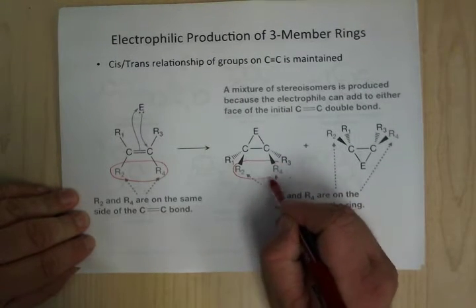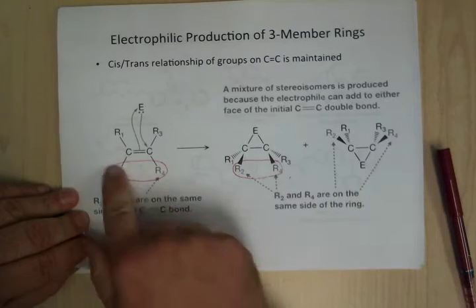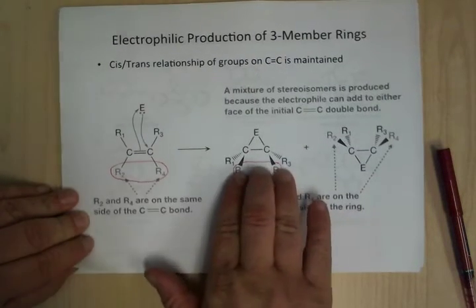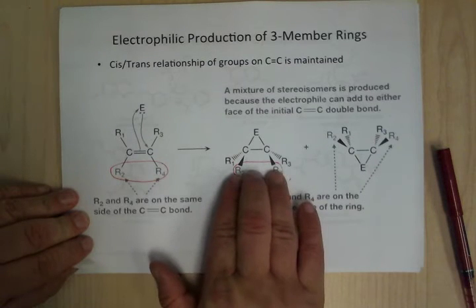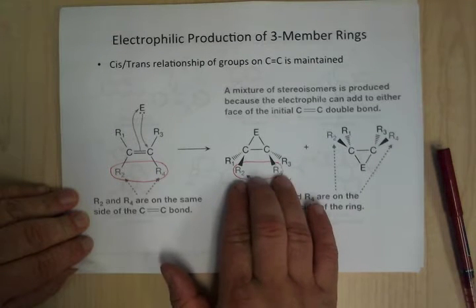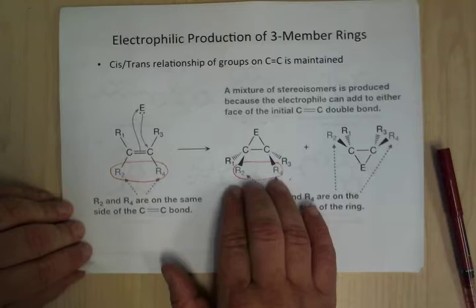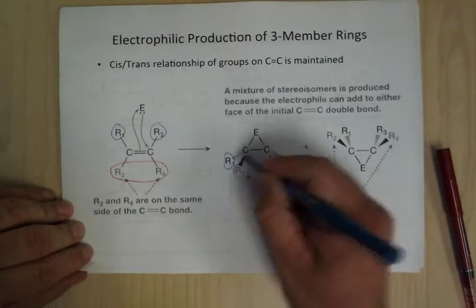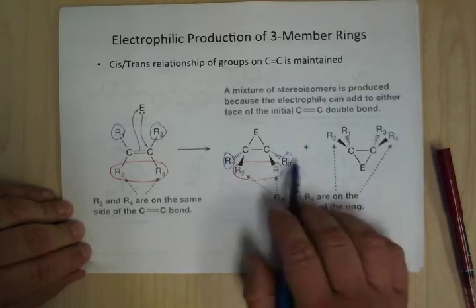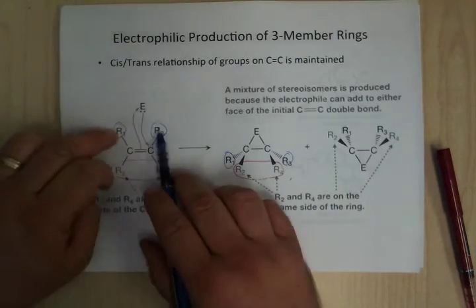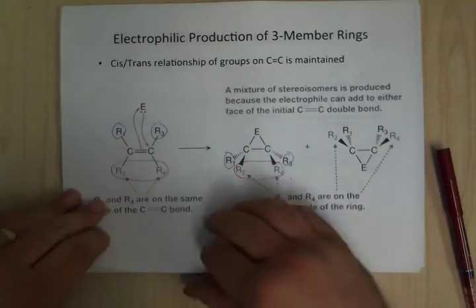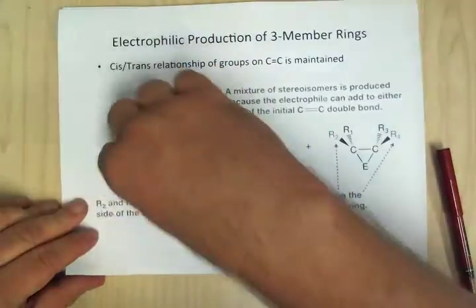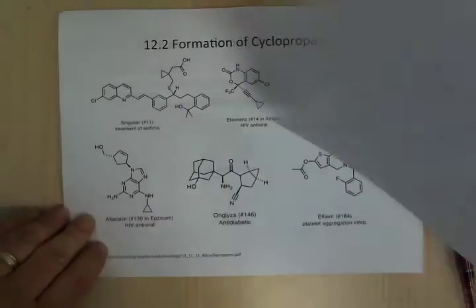This double bond becomes this new bond here, and so you get the simultaneous attack here and here to make this three-membered ring. One of the consequences of that — because it's concerted, so it happens at the same time — is that these groups are going to be on the same side. So they're going to be either both wedges or both dashes. You don't get free rotation; it adds right to one side.